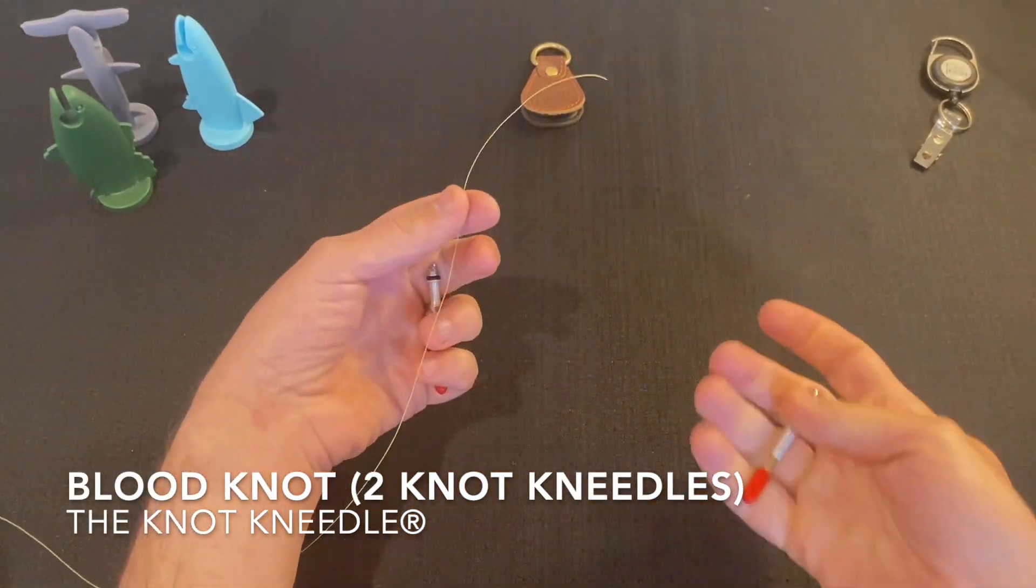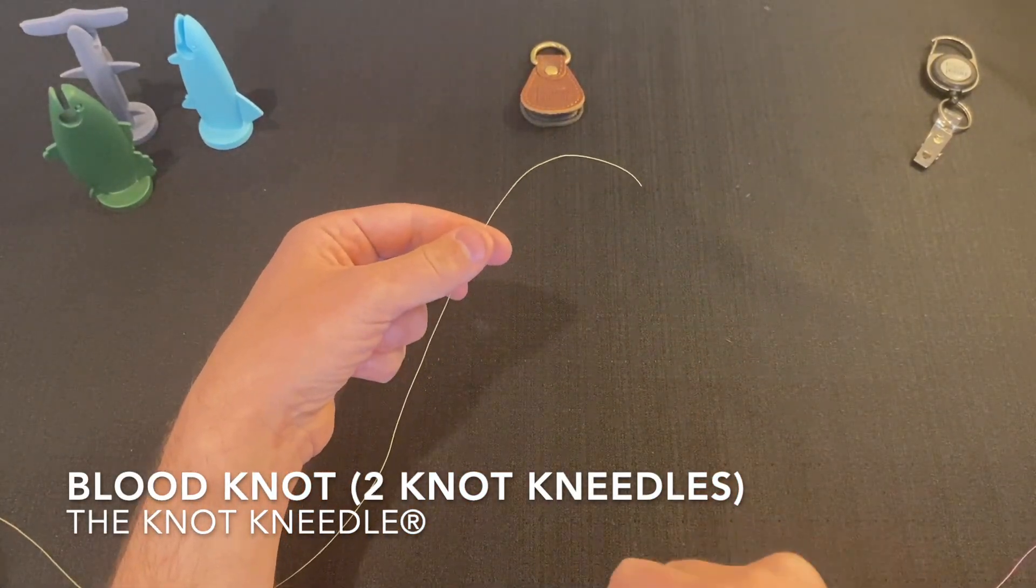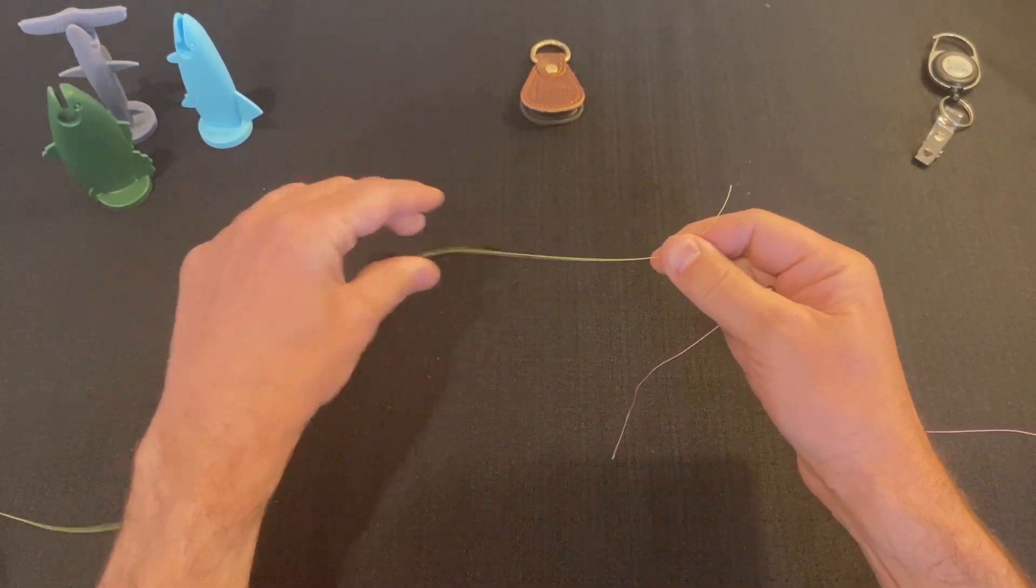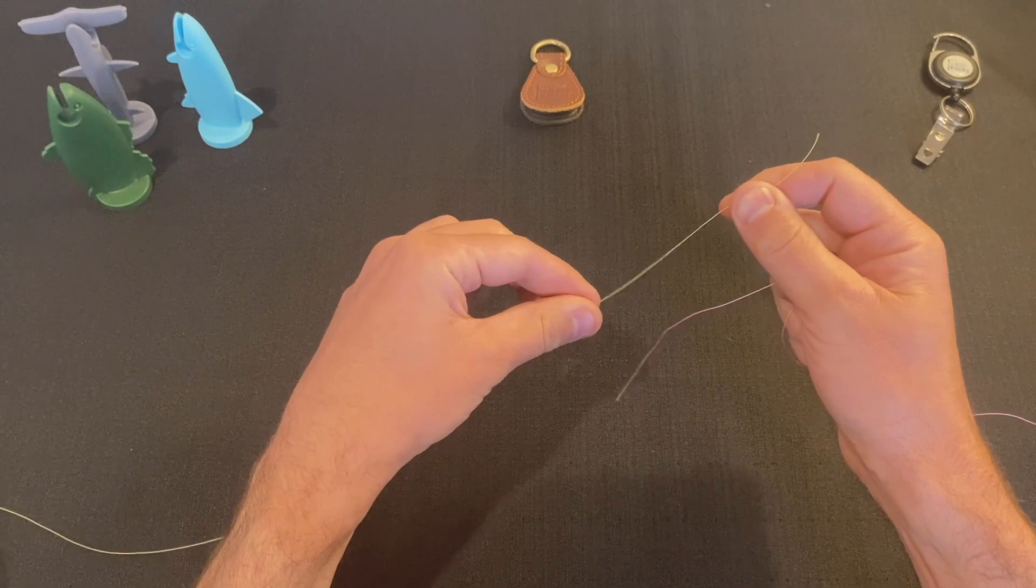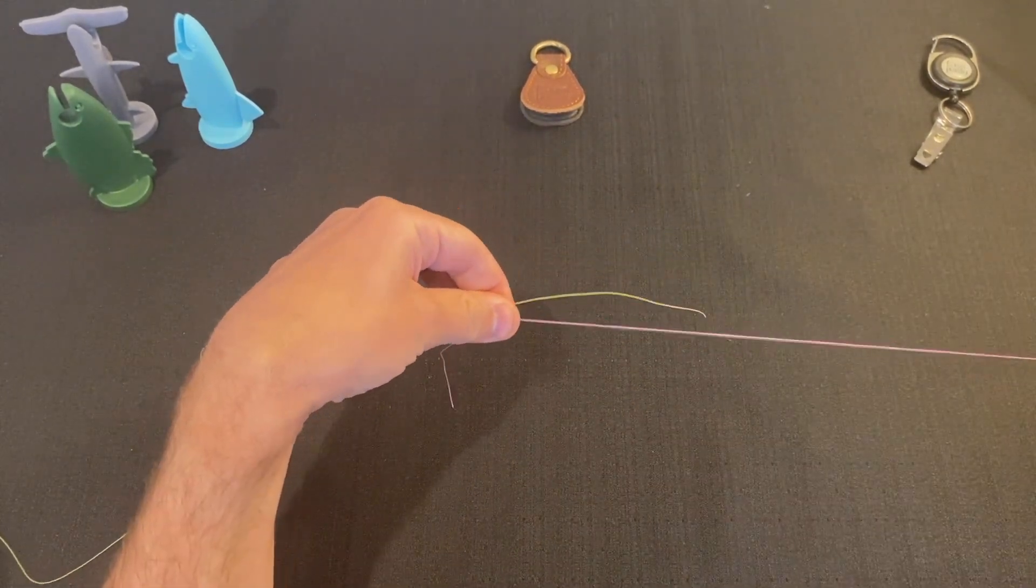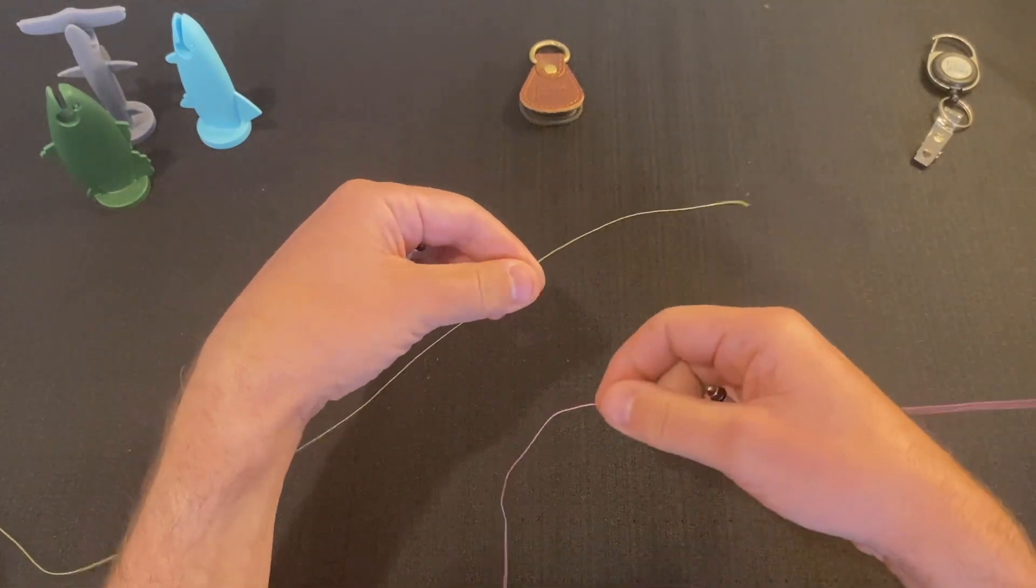Hi, I'm going to show you how to tie a blood knot using two knot needles. The yellow line represents my leader, and the pink line represents my tippet, or my other line I want to add.